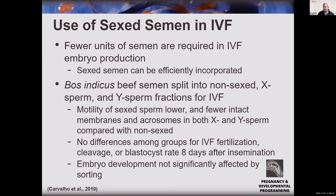In experiments where Bos indicus animals received non-sexed, X-skewed, or Y-skewed fractions, there was a decrease in motility of the sexed sperm and fewer intact membranes and acrosomes. However, there was no difference in IVF cleavage or blastocyst rates. Even though the sexed semen may not have been as competent, it didn't significantly change the ability to fertilize and cleave embryos, and there was no major evidence of embryo development being significantly affected by the sorting process. This is a good sign for using sexed semen in IVF protocols.